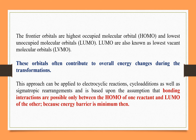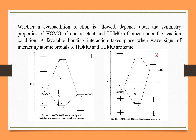HOMO and LUMO are the orbitals taking part in the reaction. Consider the first case: when the HOMO of one molecule reacts with the HOMO of another, the total four electrons are distributed across lower and higher energy levels. The energy difference between HOMO and those higher energy electrons is very high.